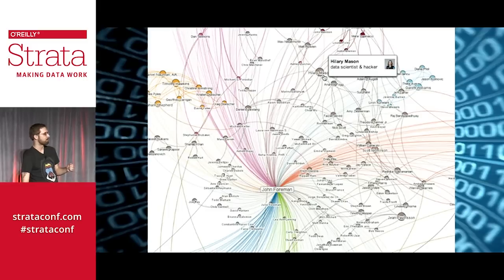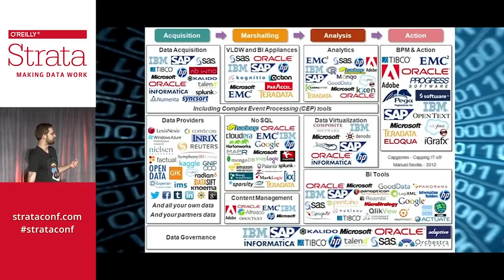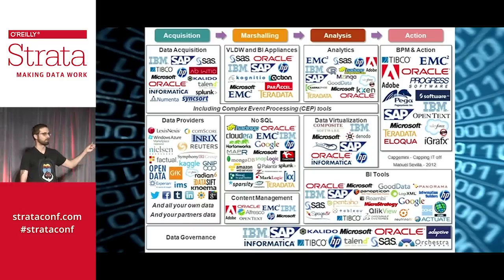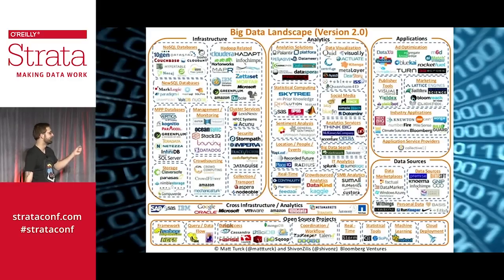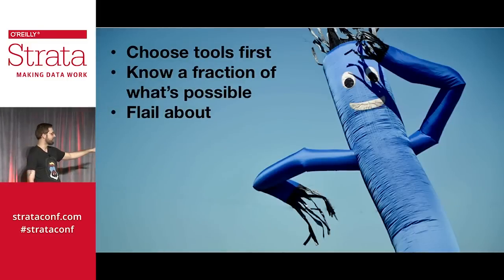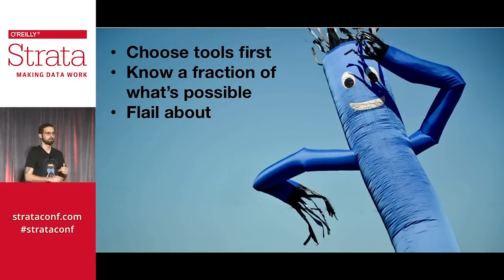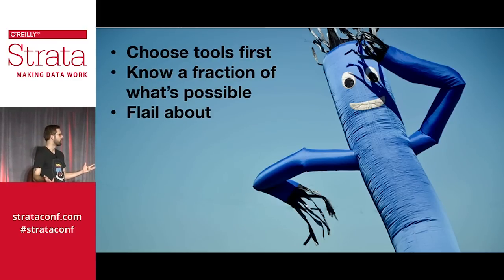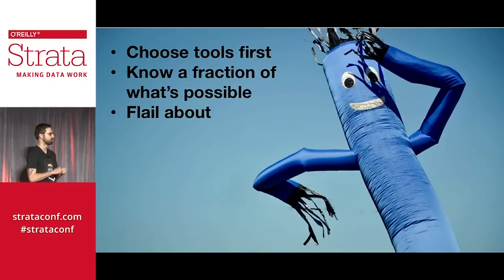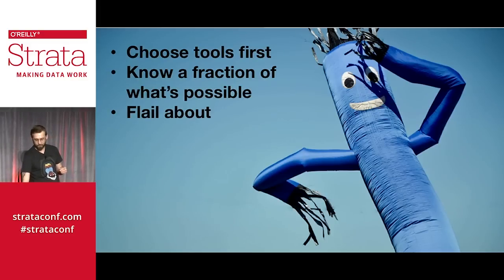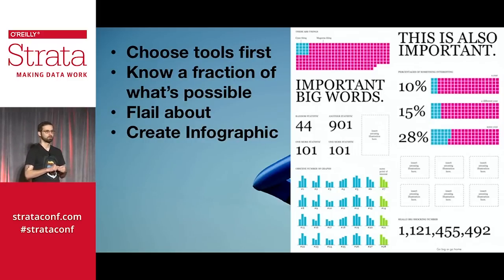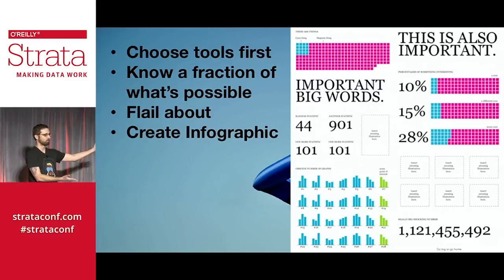So you start looking at technologies to clarify what 'big data' means, and you get horrifying slides — this is version one, this is version two. A lot of companies end up choosing their tools first: 'we need to do big data, that's synonymous with Hadoop.' Or, 'I heard we should build recommenders like Netflix and Amazon, so we're going to build a recommender for tires.' Then you flail about and build an infographic to prove to leadership that you did big data.